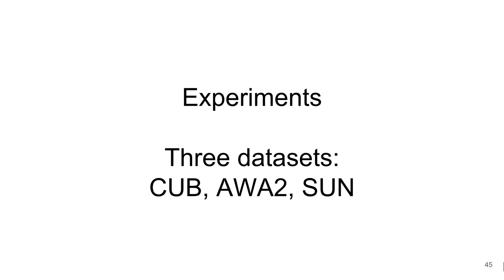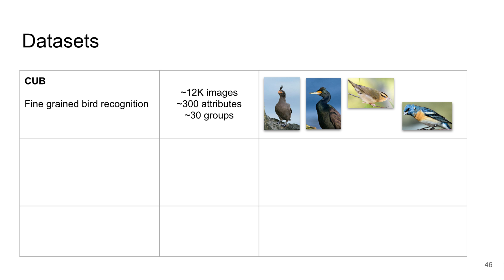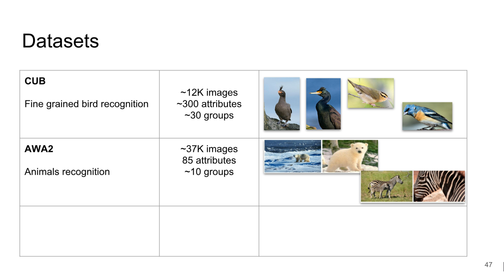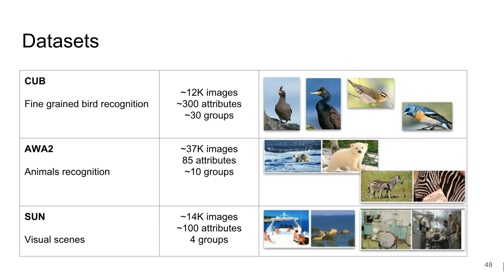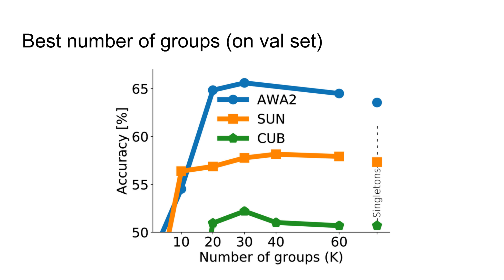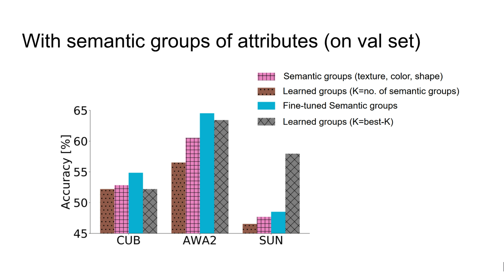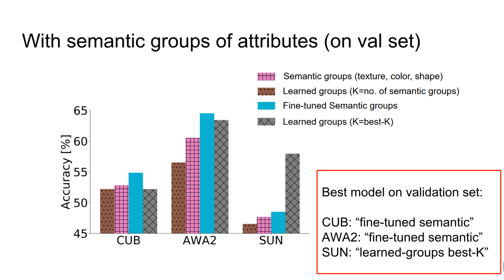In our paper, we describe our experiments on three benchmark datasets: CUB for fine-grained bird recognition, AWA2 for animal recognition, and SUN for visual scenes. We describe results about learning the groups from data or using semantic knowledge about groups. For evaluating model accuracy, we used the validation set to choose the best model variant and tested LAGO on the test set.